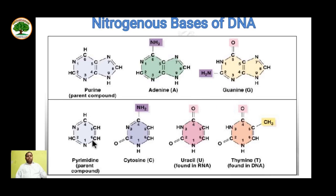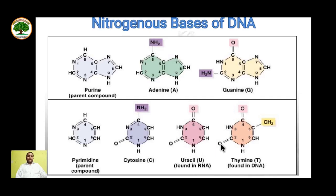In case of pyrimidine, this is the parent structure. When carbon number four is added with an amine group, it becomes cytosine. When the fourth and second carbons are added with oxygen, it becomes uracil. When uracil is added with a methyl group at the fifth position, it becomes thymine — that is, five-methyl uracil is thymine.